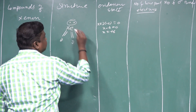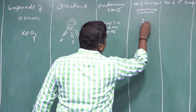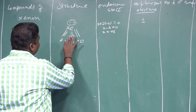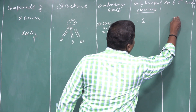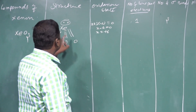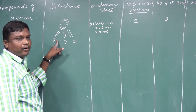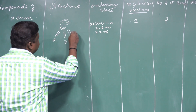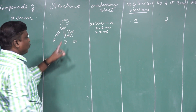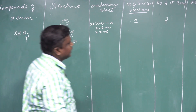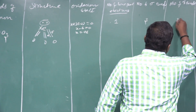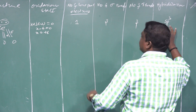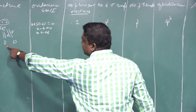For XeO3: number of lone pairs of electrons = 1. Number of sigma bonds = 3. Number of pi bonds = 3 (because each double bond contains 1 sigma and 1 pi bond, giving 3 pi bonds). Hybridization = sp3.